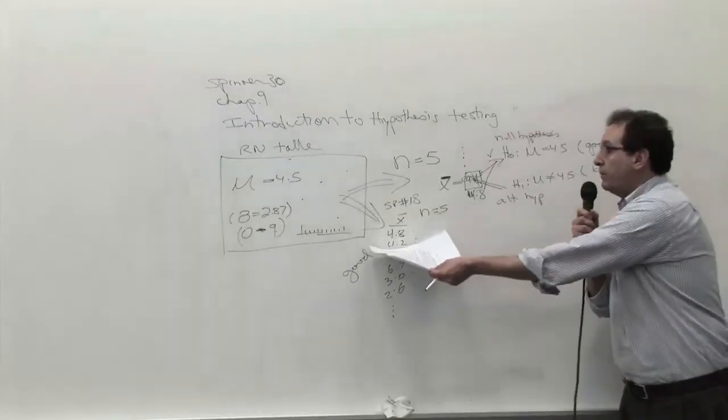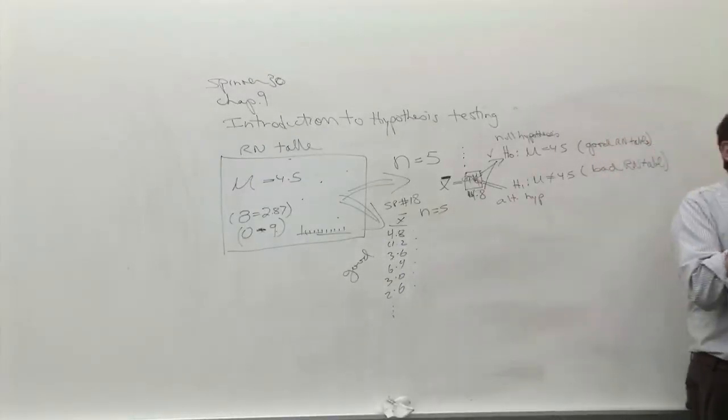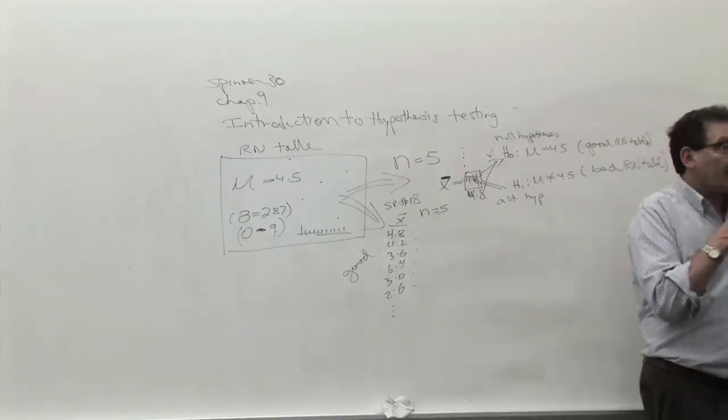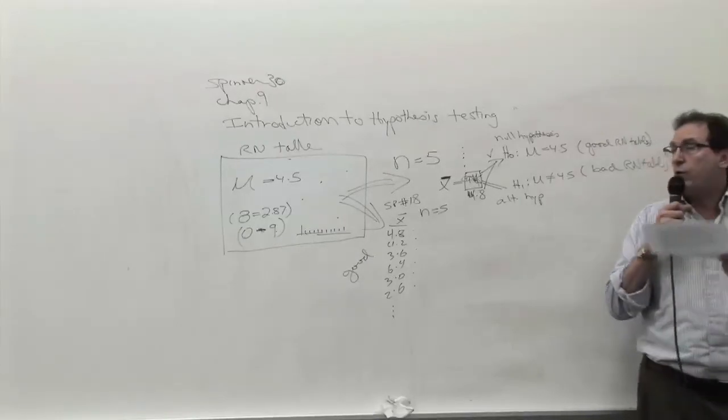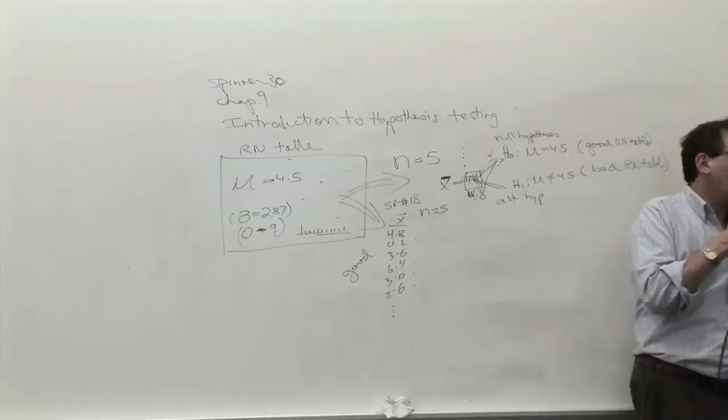And in fact, your experience with taking numbers out of a perfectly good table, very often you got numbers even more extreme than 4.8, like 5.0, 5.2, 5.4, or 4.2, or 4.0, or 3.8. That's very common.